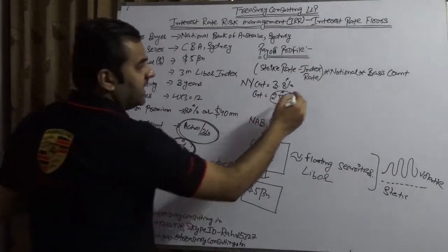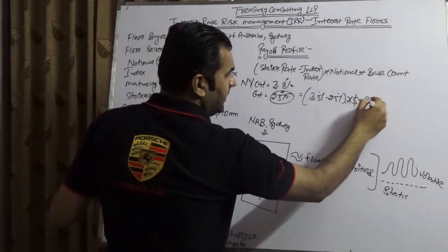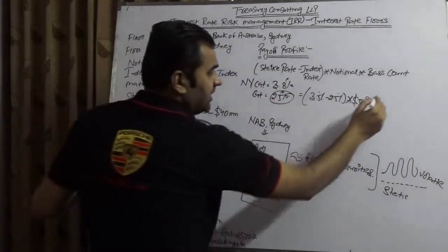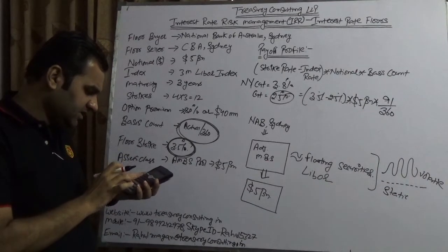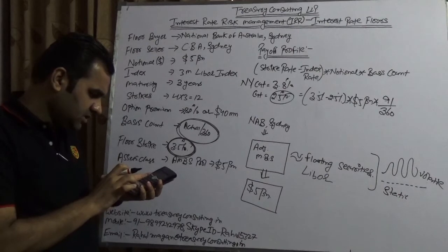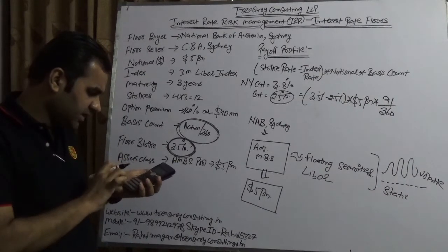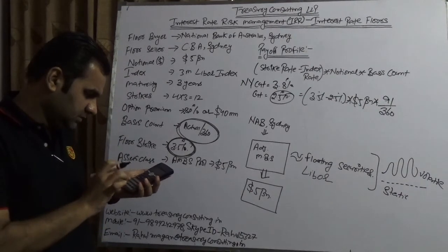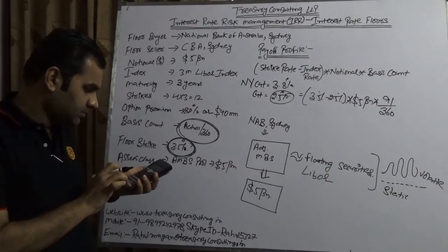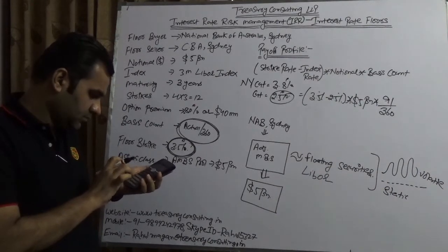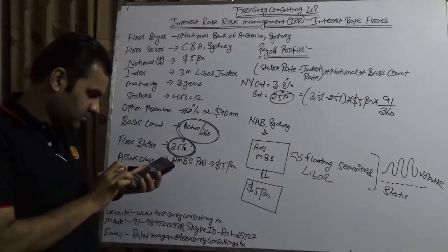They are going to receive 3.5% minus 2.5%, applied to a notional of $5 billion, over a quarterly period of 91 days: 5,000 million × (91/360) × 1% = approximately $12.63 million.